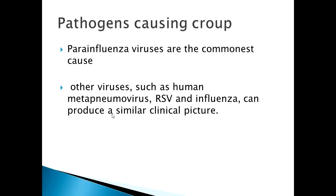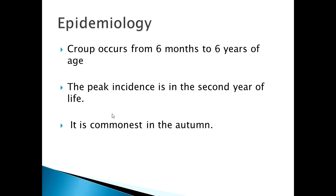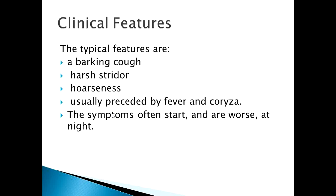Viral croup accounts for over 95% of laryngotracheal infections. The most notorious organism is parainfluenza virus, but other viruses such as human metapneumovirus, respiratory syncytial virus, and influenza can produce a similar clinical picture. Croup occurs from six months to six years of age; the peak incidence is in the second year of life, and the season most common is autumn.